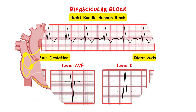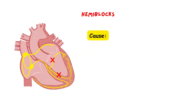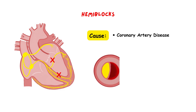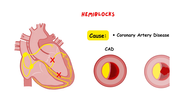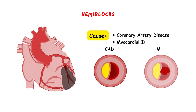In most cases, hemiblocks occur due to coronary artery disease or with complete occlusion of the artery supplying the bundle branches and their subdivisions. In other words, hemiblocks often are a result of myocardial infarction. To be able to understand this, we have to learn the anatomy of the blood supply system of the heart and the different parts of the electrical conduction system. The heart is supplied with blood by the left and the right coronary artery.